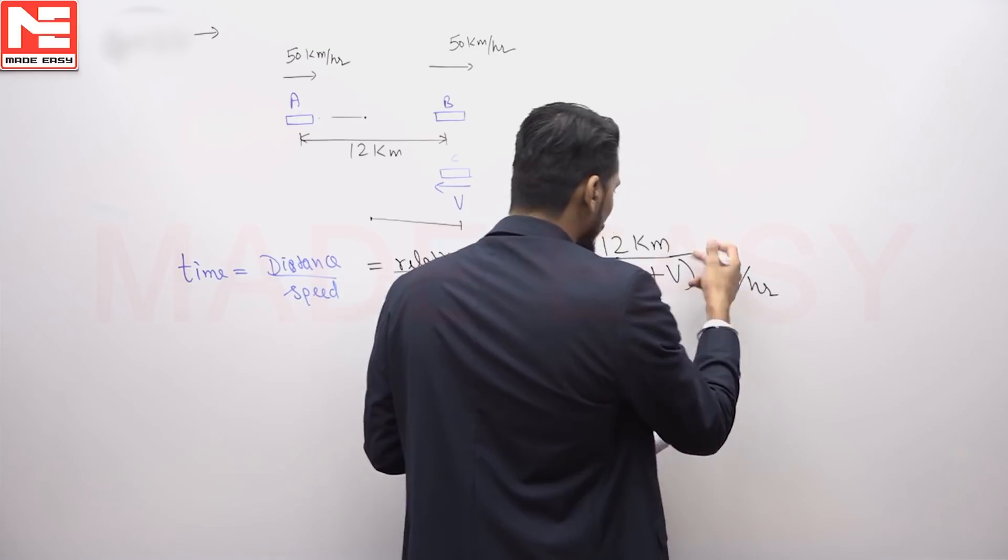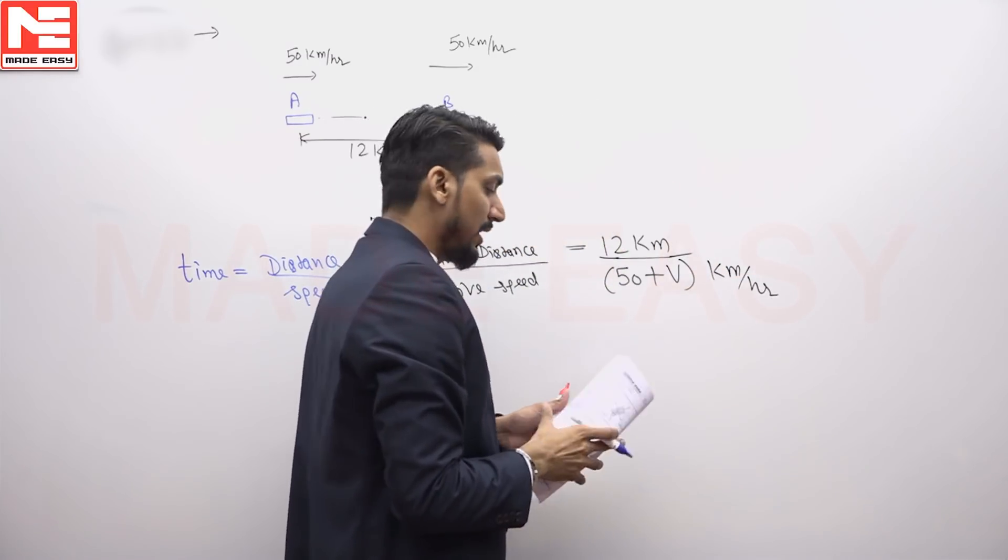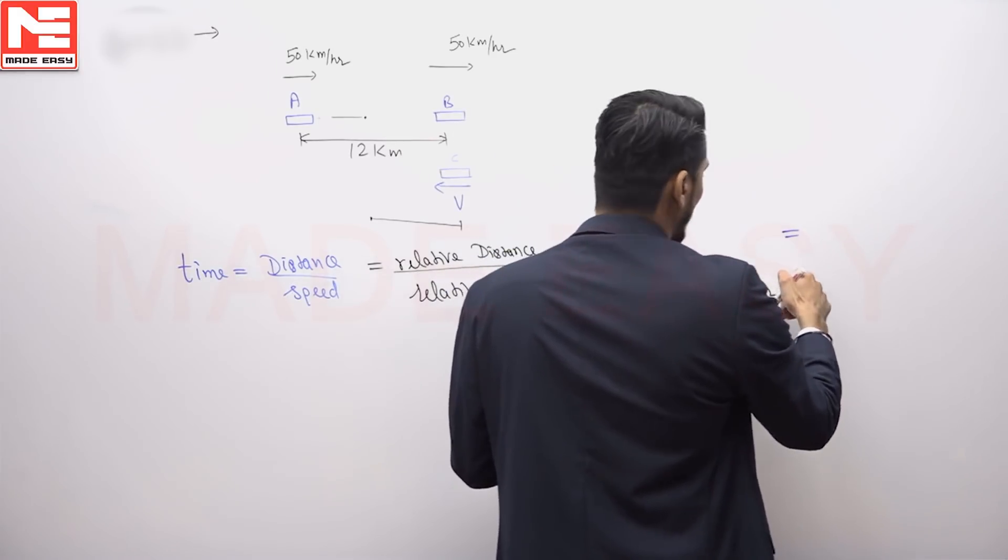It is given as kilometer per hour, so the unit of this data will come out in hours. What is given? This time is given as 5 minutes.